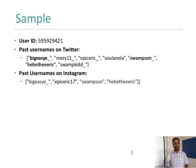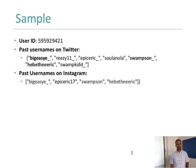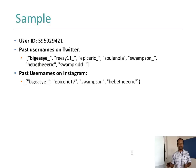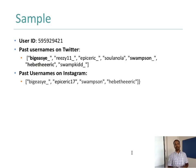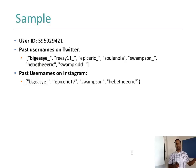Here is an example of users whose handles have changed. User ID 595929421 — we keep track of that. If you look at the names this handle has gone through: BigEASYE_underscore, REASY11, EPISETIC_underscore, SWAMPSOONXY, SWAMPK — it changed 7 times. And if you look at the same user account in Instagram, it seems to have also changed 4 times, but there is a connection between the user handles the person had in Twitter and in Instagram.